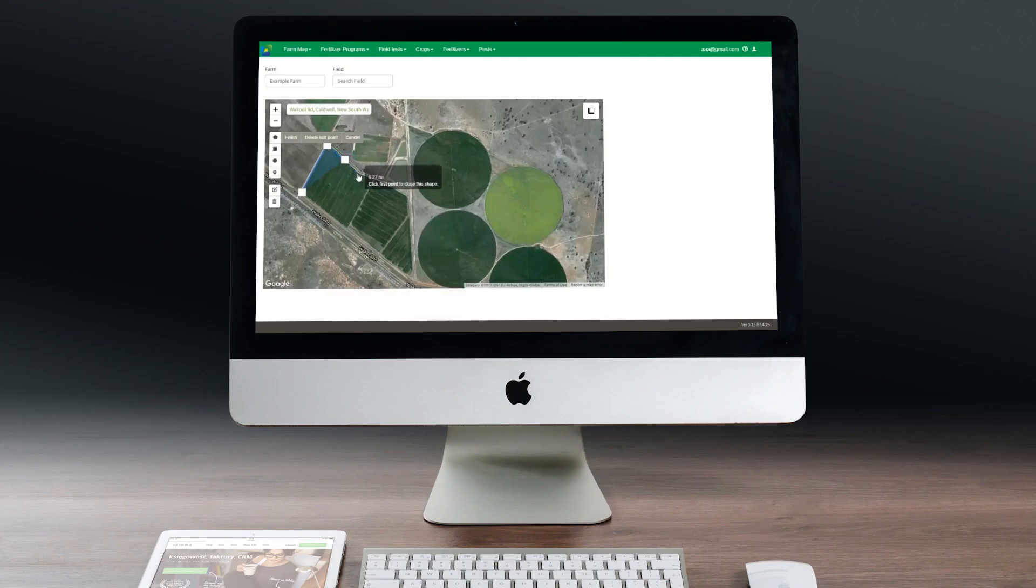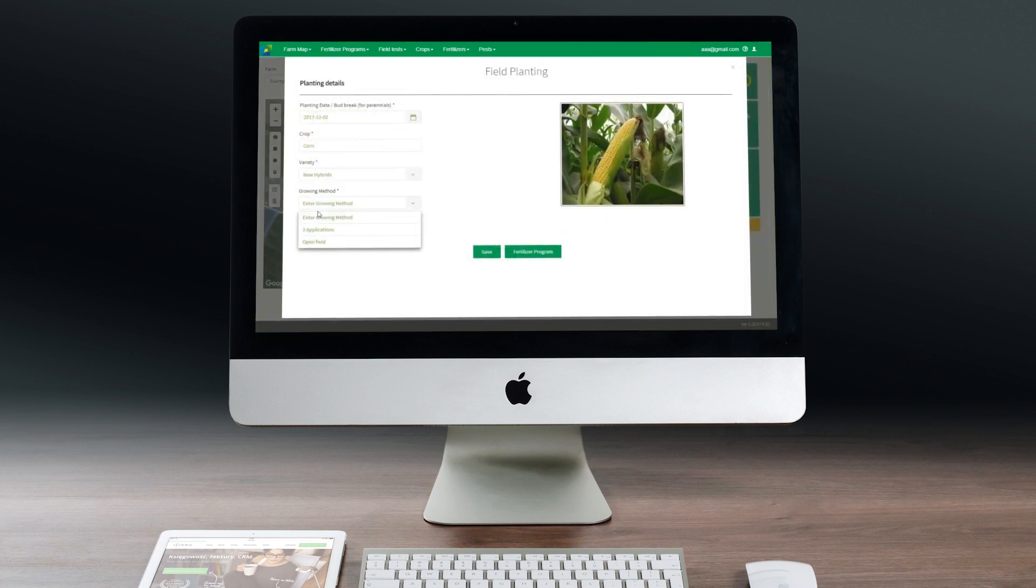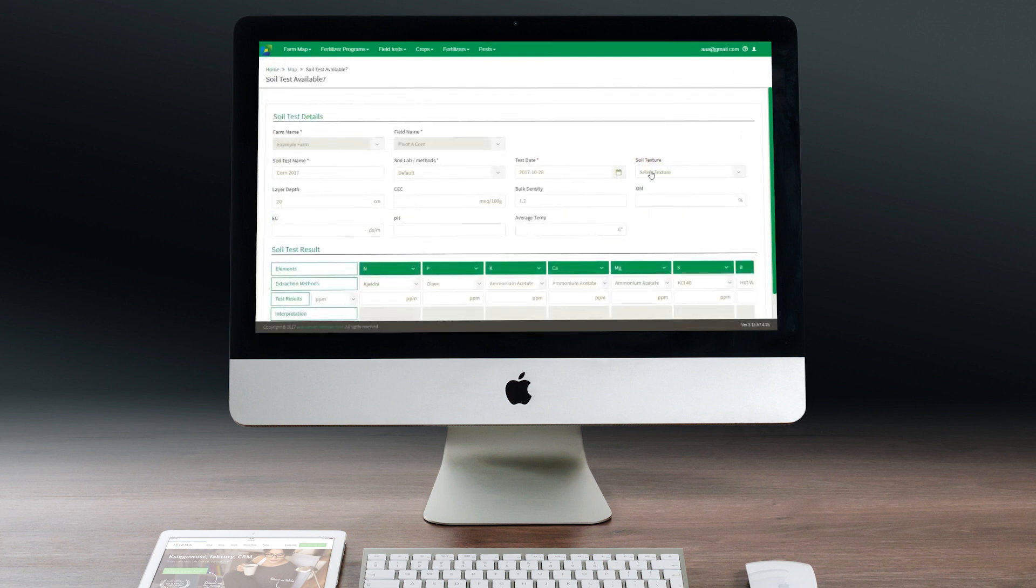Another possibility of an appropriate interpretation of the analysis results is provided by a special computer software. This software takes into account all sample specific data and on this basis calculates the required amount of fertiliser.